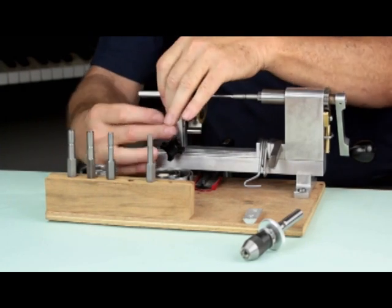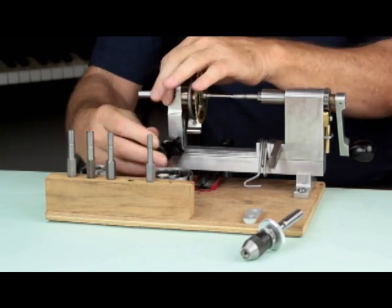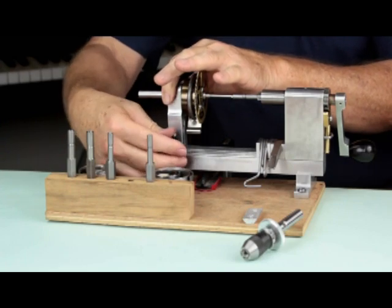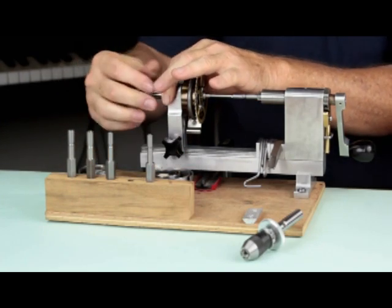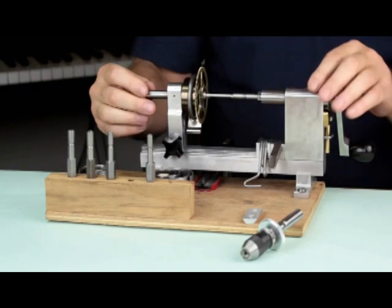Now that everything is in the proper position, move the tailstock towards the mainspring arbor until the pivot end of the arbor is held firmly in the cone-shaped cup at the top of the tailstock.